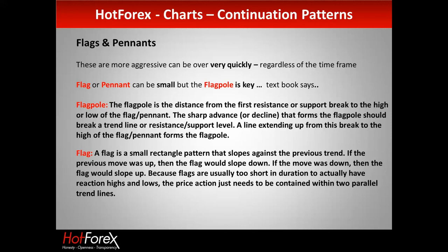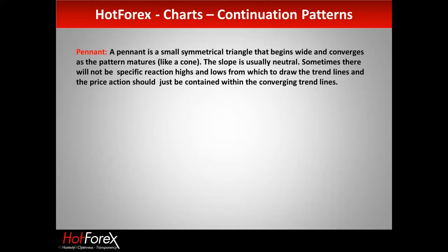The price action just needs to be contained within two parallel trend lines — that's why traders like flags. You can clearly see three or four candles within the trend lines, get in quickly, and it can be a quite strong move. A pennant is simply a flag that creates a triangle — a small symmetrical triangle that begins wide and converges as the pattern matures. The slope is usually neutral. The price action is just contained within the converging trend lines, then bang — off we go.